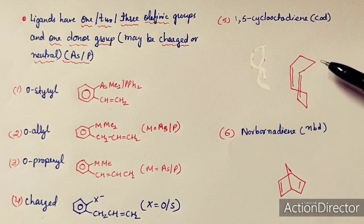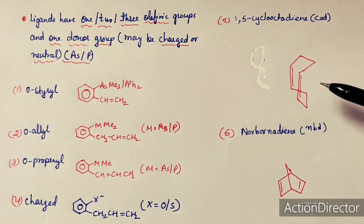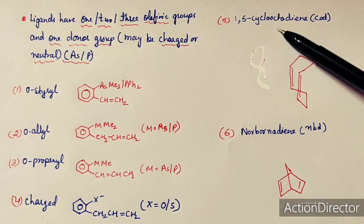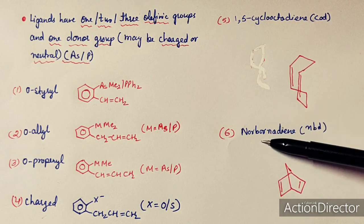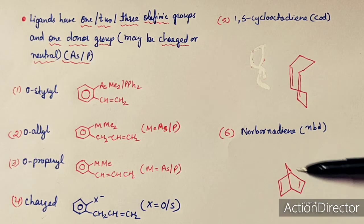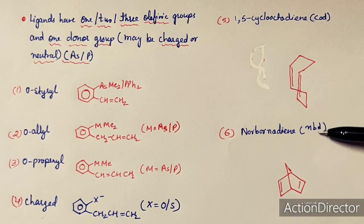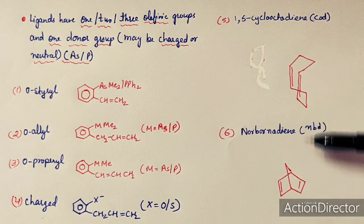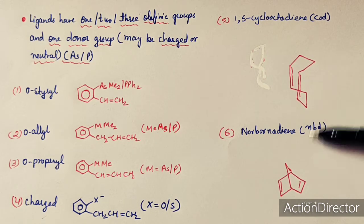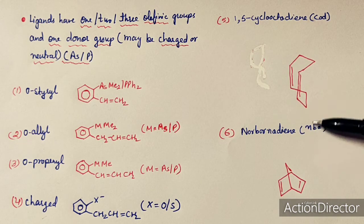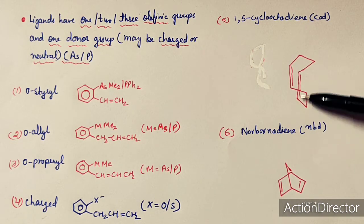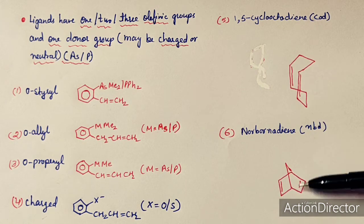Two popular examples of ligands having non-conjugated double bond systems are 1,5-cyclooctadiene (COD) and norbornadiene (NBD). These can form chelates with metals and act as chelating ligands.